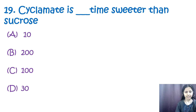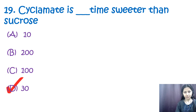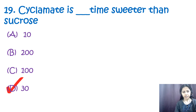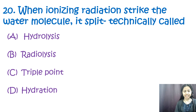Question number nineteen: cyclamate is how many times sweeter than sucrose? Options are: a) 10, b) 200, c) 100, d) 30. The correct option is d, 30. Cyclamate is an artificial non-nutritive sweetener that is 20 to 30 times sweeter than sucrose (table sugar).